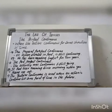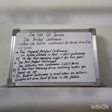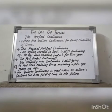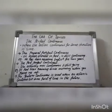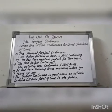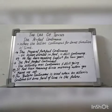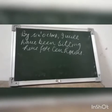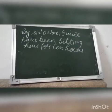Future Perfect Continuous: this is used when an action is to continue till some point of time or for some period of time in the future. For example, 'By six o'clock, I will have been sitting here for ten hours.' This is the end of our topic. Thank you.